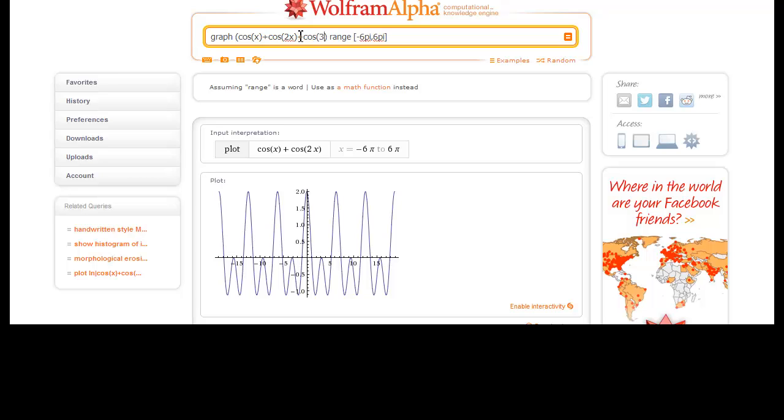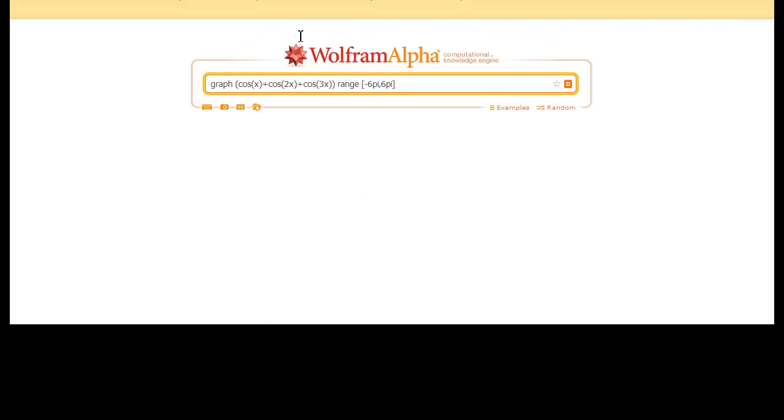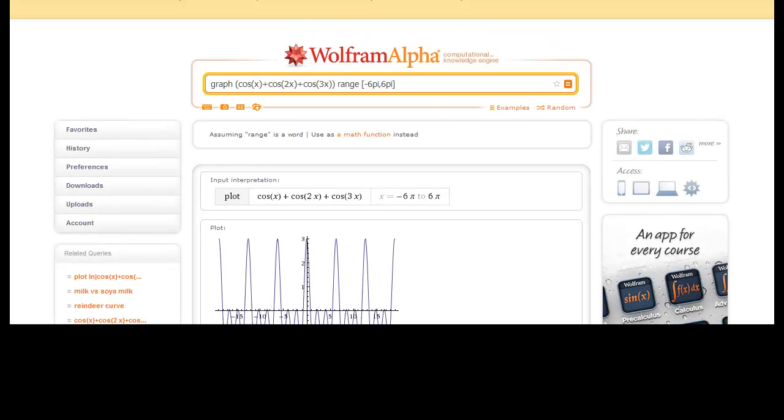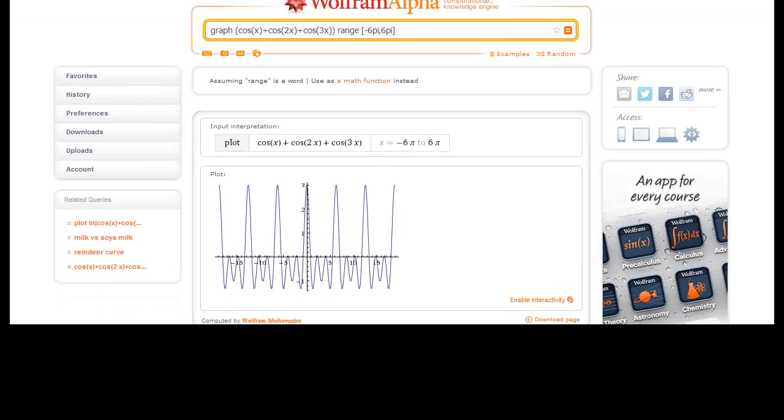And the same pattern kind of applies if we add 3x and 4x and so on. Your waveform becomes a little more complex, but it still has the periodicity of 2π. And that is why we would still interpret the sound as the fundamental frequency, even though all these different frequencies are in there.